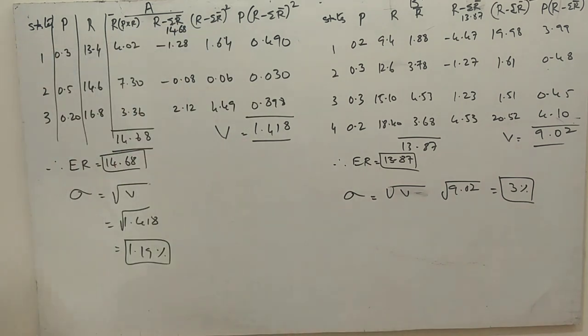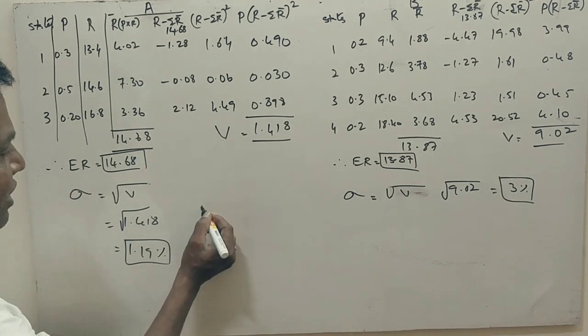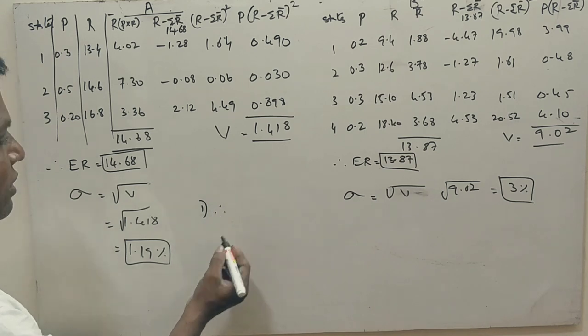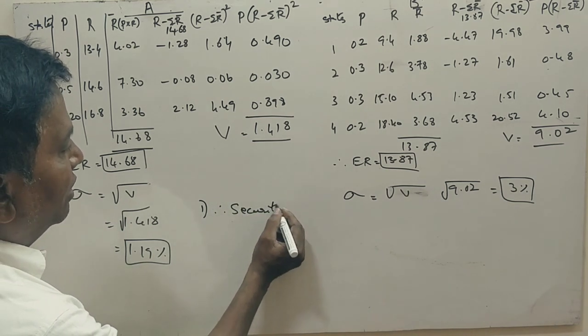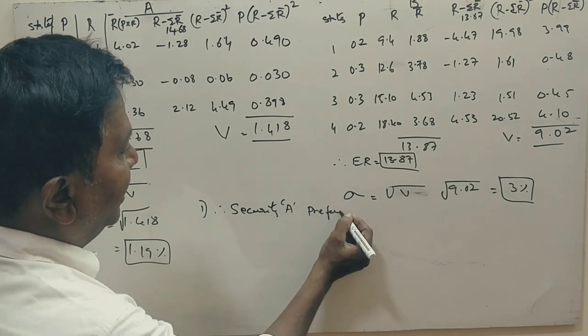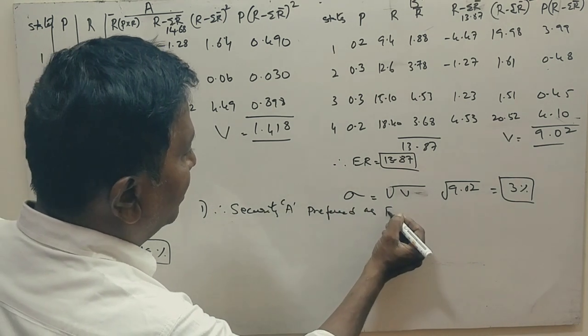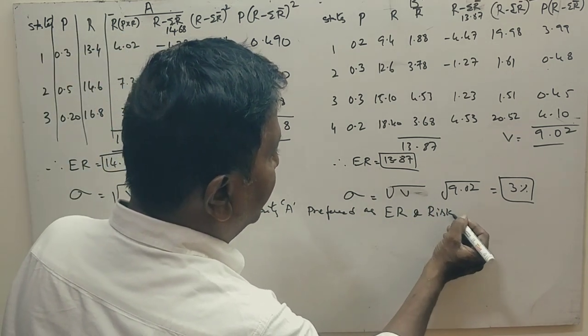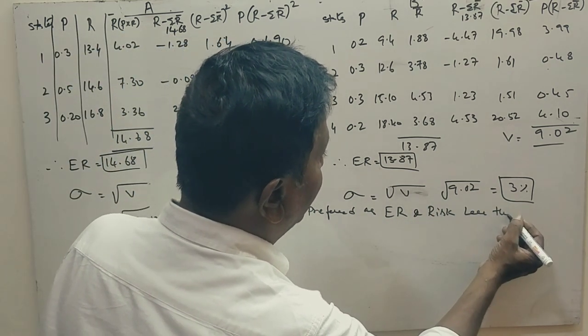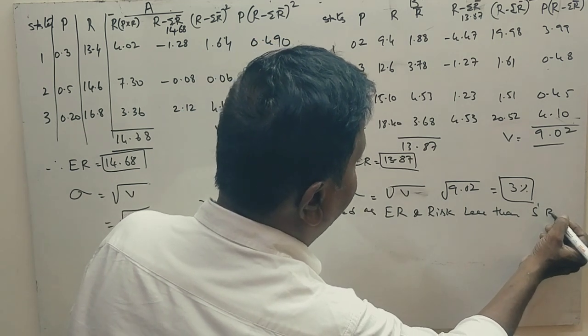Now, if you look here, the risk is also lower in case of Security A, and expected return is also high. Therefore, for the first question, Security A is preferred as ER is higher and risk is lesser than Security B.